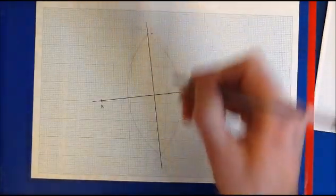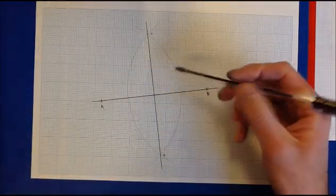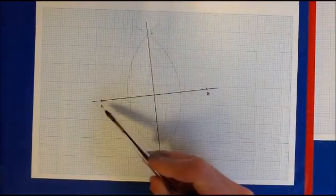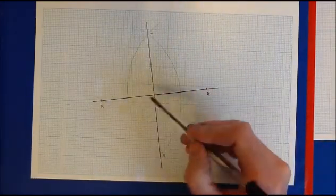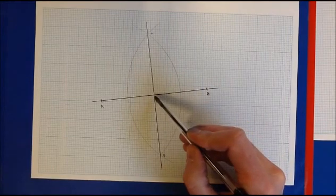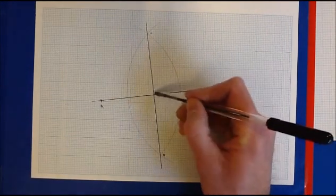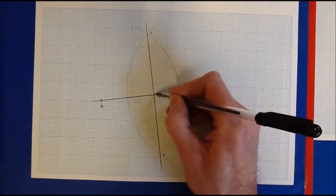And I'm going to call that CD. CD is a perpendicular bisector of AB. In other words, the distance between A and this line is exactly the same as the distance between B and this line. And this angle here is 90 degrees.